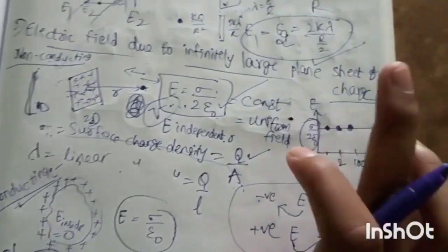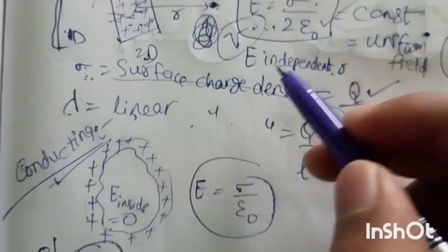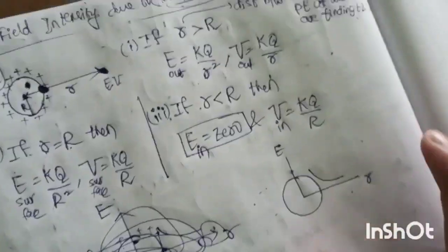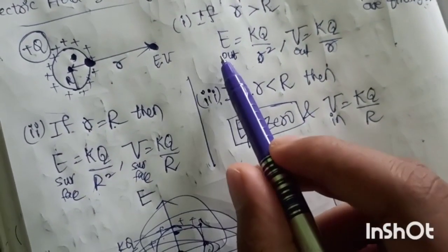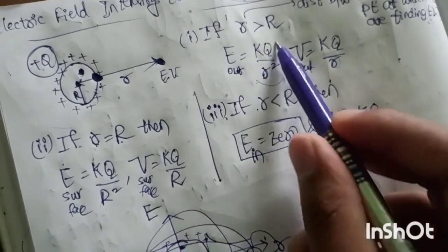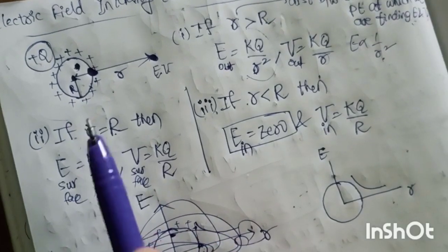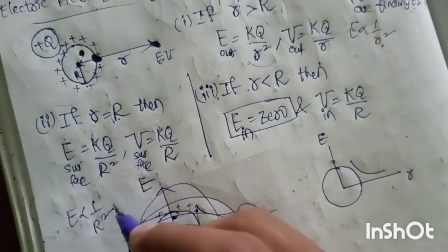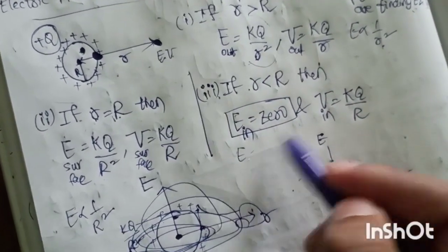Note: for the plane sheet of charge case, E is independent of r. But for the hollow sphere outside, E is inversely proportional to r squared. And for the solid sphere inside, E is proportional to r. These are the different cases.